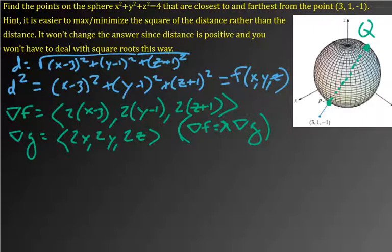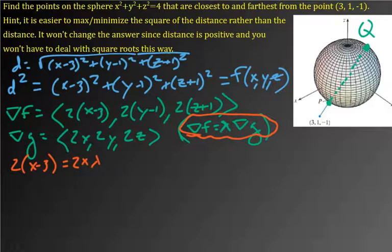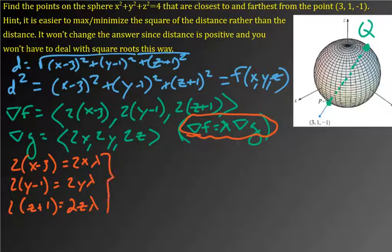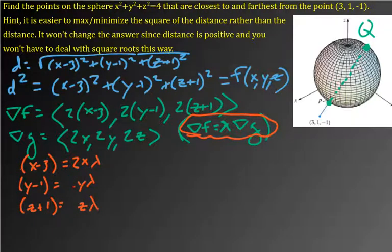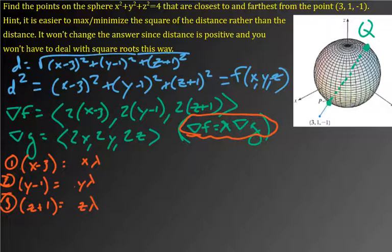So if we do that, we get three equations — I'll do it in red down here. We get: (X minus 3) equals X·lambda; (Y minus 1) equals Y·lambda; and (Z plus 1) equals Z·lambda. All of those — you could cancel the 2s on both sides, which makes the algebra easier. These three equations are three of the four we'll have. The fourth one is the sphere constraint itself, and so we have X, Y, Z, and lambda to deal with.